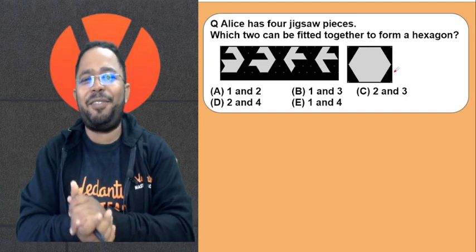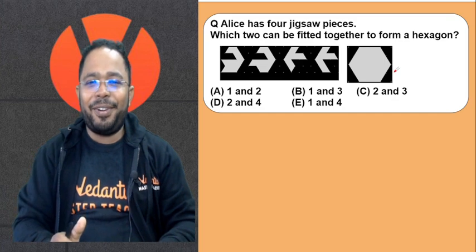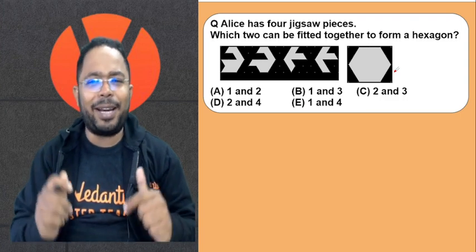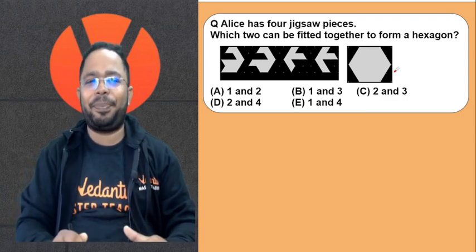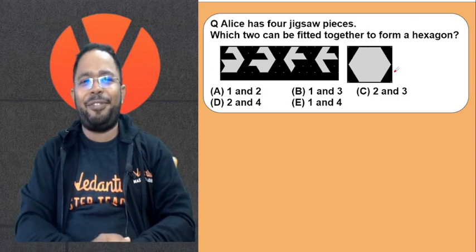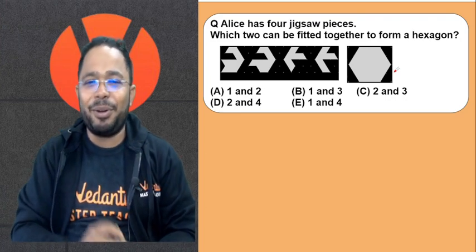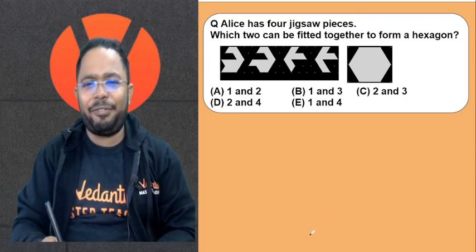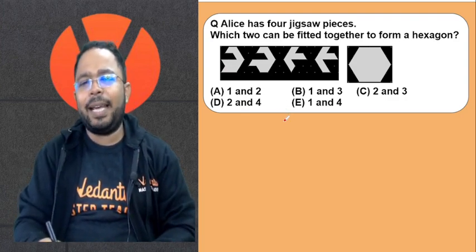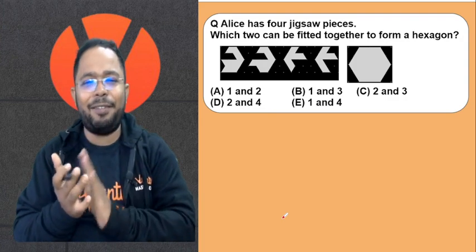I'm hoping everyone has given their answer in the comment box — it's very important, please do write your answers. The correct answer for this question is option B: pieces 1 and 3. If we attach pieces 1 and 3, we will get the complete hexagon. Very well done, my lovely students!